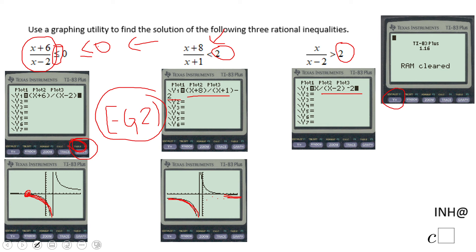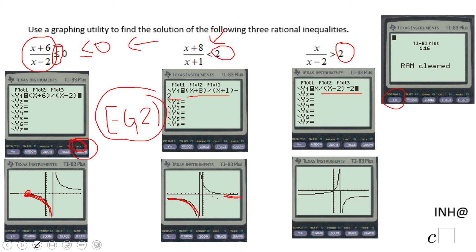Let's take a look at the graph here. We're looking when this function is above the x-axis, so that is here. It looks to me the interval is zero to two as the solution set.